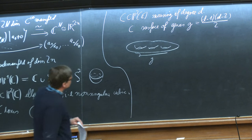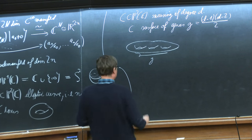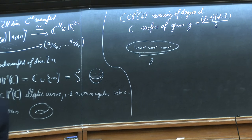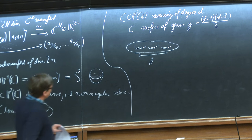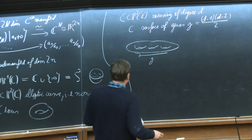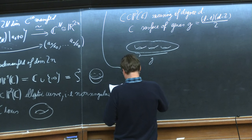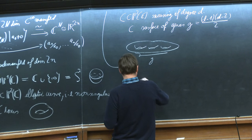More generally, a non-singular curve C in P²(ℂ) of degree d — the zero set of a homogeneous polynomial of degree d in three variables — is a Riemann surface of genus g, where g = (d−1)(d−2)/2. So we see these are some nice manifolds.